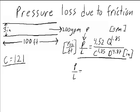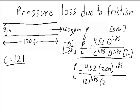It's equal to 4.52 times our flow rate, 200, raised to the 1.85 power, divided by 121 raised to the 1.85 power times 3 to the 4.87 power. We have a 3 inch pipe.